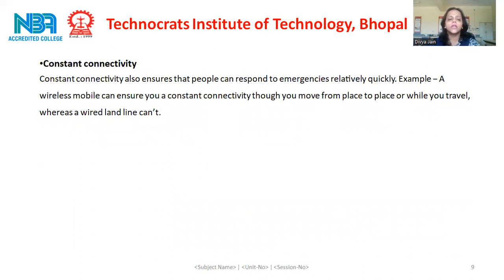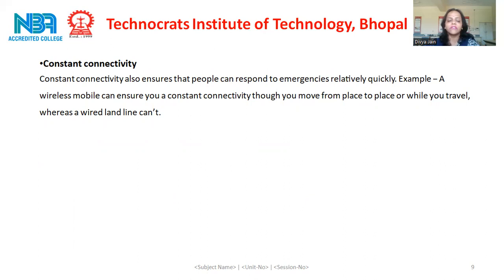The last advantage is constant connectivity. Constant connectivity also ensures that people can respond to emergencies relatively quickly. For example, a wireless mobile can ensure constant connectivity though you move from one place to another or while you are traveling, whereas a wired landline can't provide this facility.